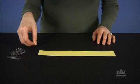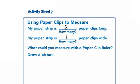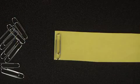Students should then use their paper clips to measure the width of the strips, and record their measurements on the Activity Sheets. The strip of construction paper is six paper clips long, and one paper clip wide.